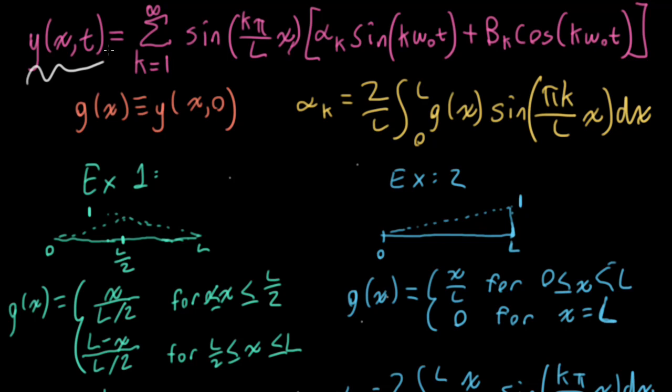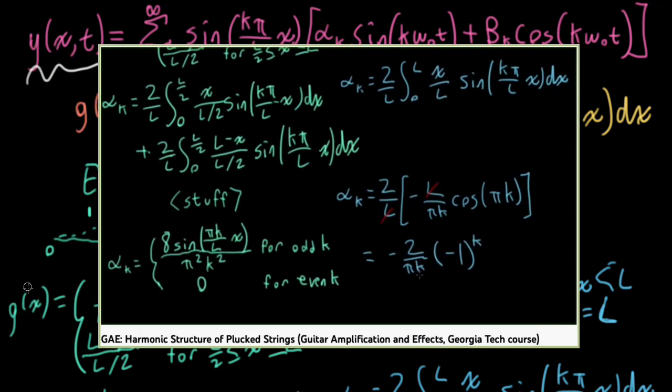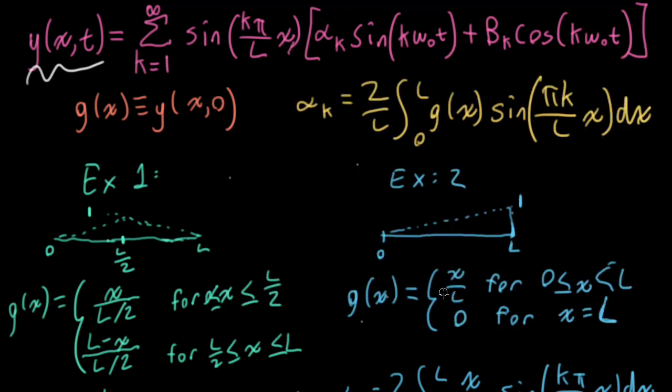This is a set of scribblings I scribbled in the previous lecture where we looked at the initial conditions on the position of the string representing plucking near the middle of the string or plucking near the bridge, and I made a couple of really embarrassing errors that I really need to fix here. So I got the sine and the cosine swapped. That's embarrassing.